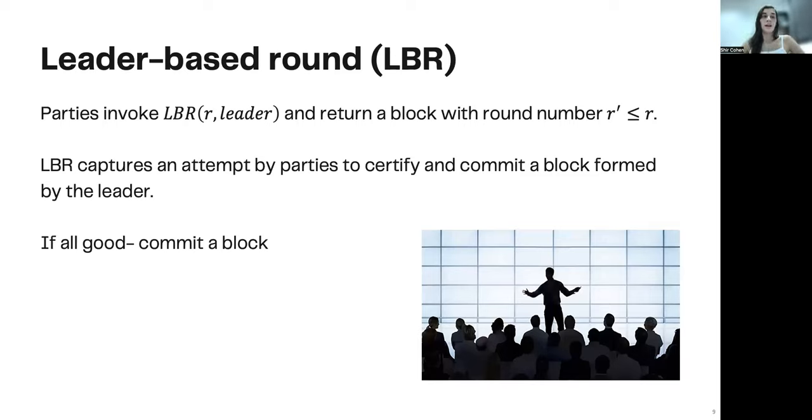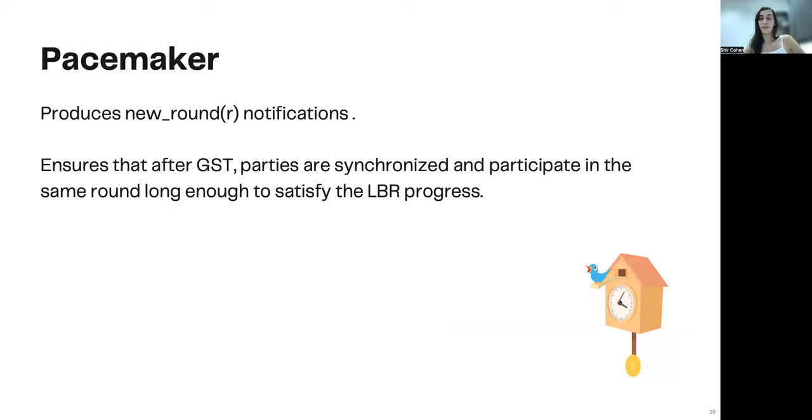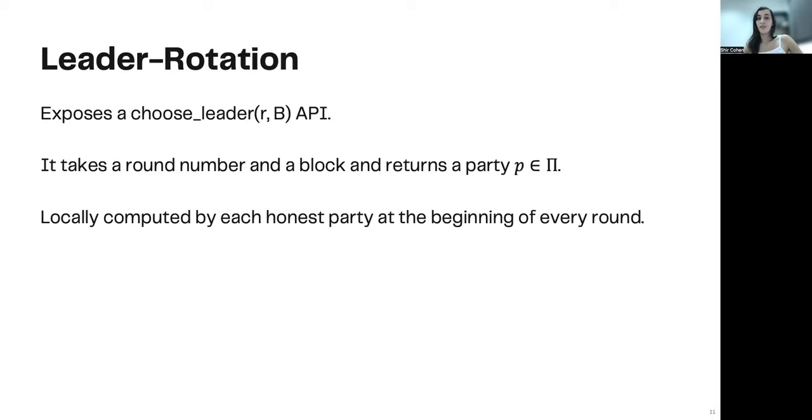So the LBR, the leader-based round, provides an LBR API that takes a round number R and the leader. And it returns a block with round number R prime that is less than or equal to R. LBR captures an attempt by parties to certify and commit a block formed by the leader in that round. And if everything goes well, they all commit a block for that round. Secondly, the pacemaker produces new round R notifications. It ensures that after GST, parties are synchronized and they participate in the same round long enough to satisfy the LBR progress property. And finally, the leader election mechanism is an encapsulation that we propose here in this work. It exposes a choose leader API. It takes a round number R and a block P and returns a party P from the set of all parties. It is locally computed by each honest party at the beginning of each round.